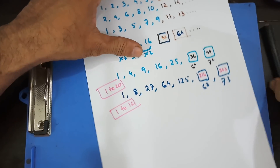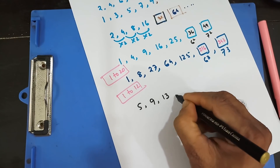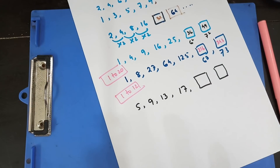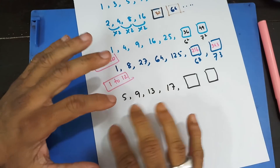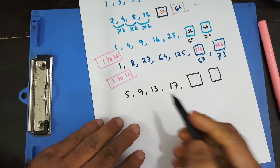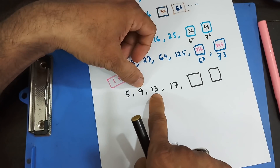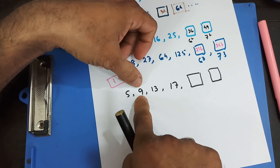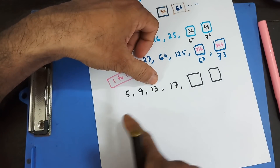So those are very basic ones. But let's say you have another sequence: 5, 9, 13, 17, and they're asking you to find out the next two terms. This is not like the previous ones — it's a little bit different. What you do is observe and see if you can find a rule that connects all the terms. The first thing you do is subtract the first term from the second: 9 minus 5 gives you 4. Then 13 minus 9 is also 4, and 17 minus 13 is 4. So we have the difference.